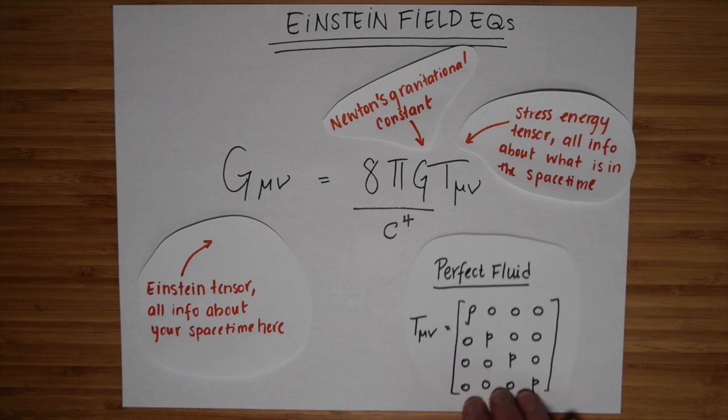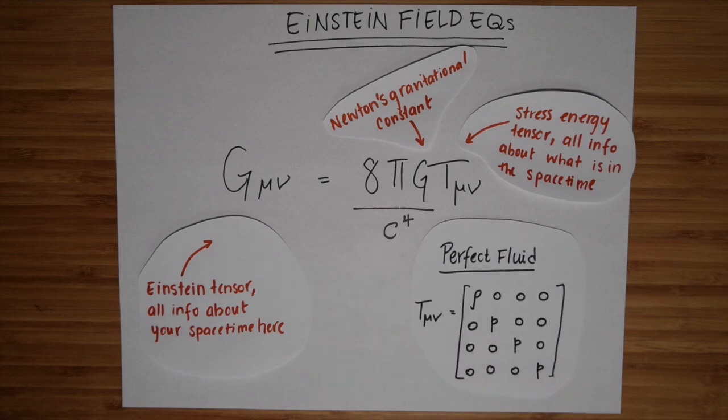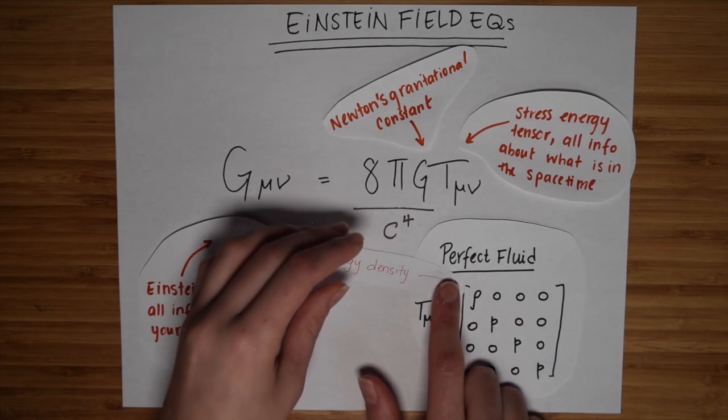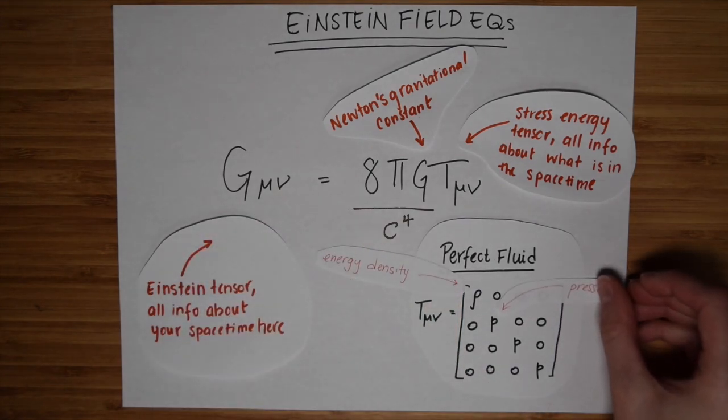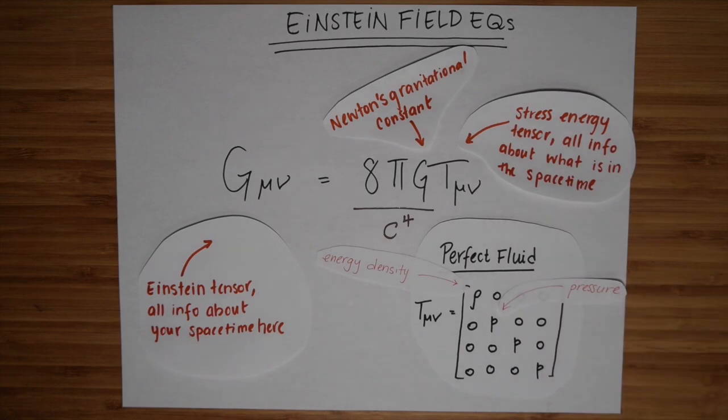So FLRW said, okay, we got our metric. But what is T? What is the stuff that's in our universe? And they said, let's just take the simplest form of matter we can think of, a perfect fluid. The stress energy tensor for a perfect fluid looks like this. The first entry along the diagonal is the energy density of the fluid, and the rest of the diagonal entries encode the pressure of the fluid. So that's great. We already know what T mu nu is. So now I'm just going to use the metric to compute the Einstein tensor.